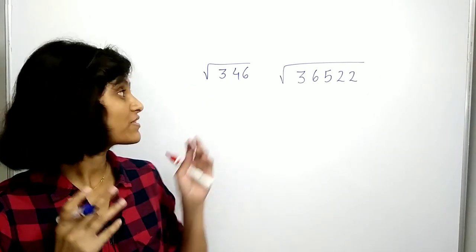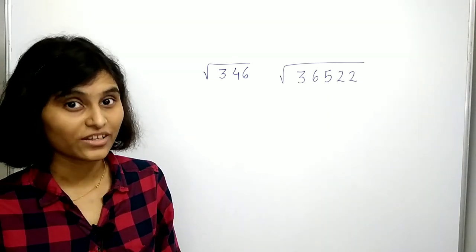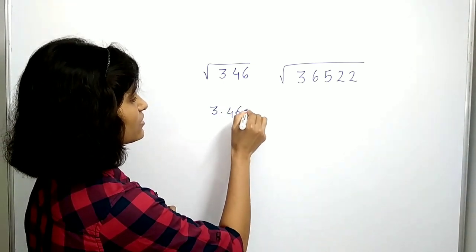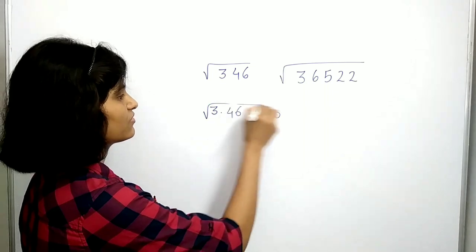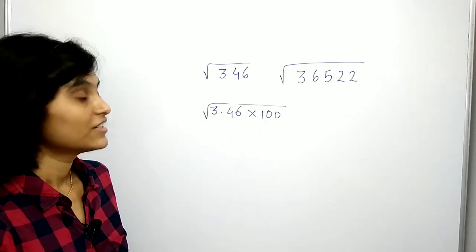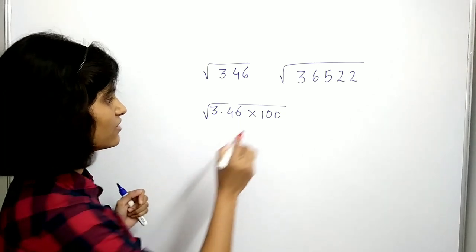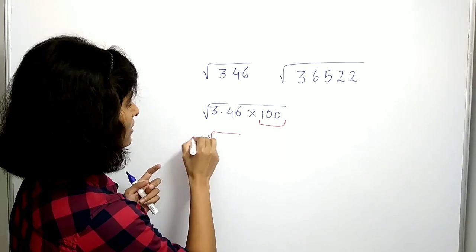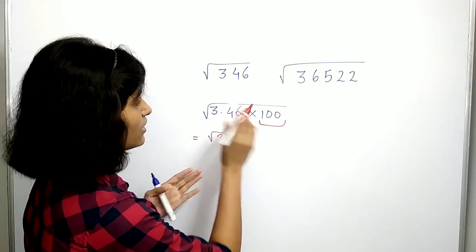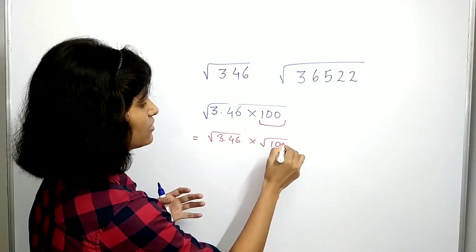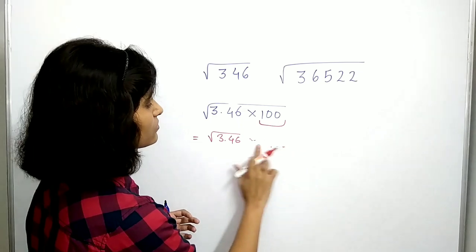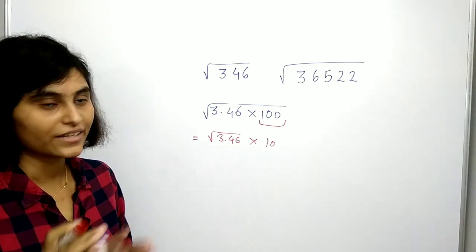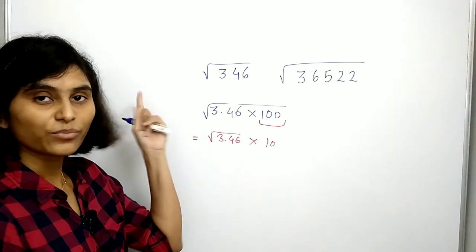Now let us find the square root of 346. Here is a trick: you can write 346 as 3.46 times 100. We want the square root of this. The reason for doing this is we can easily find the square root of 100, which is 10. So we can write this as the square root of 3.46 times the square root of 100, which is 10.